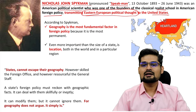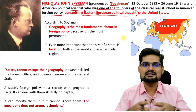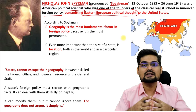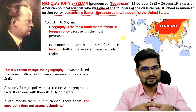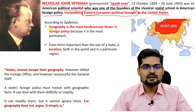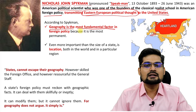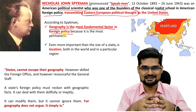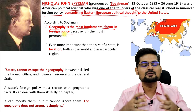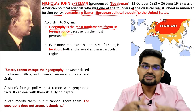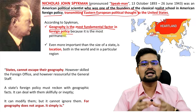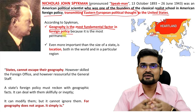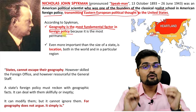Heartland and rimland are just adjoining areas according to different theories. Rimland is Speakman's theory; heartland we have already learned in Mackinder's theory, which was essentially about Eastern Europe being the heartland of the world. According to Speakman, geography is the most fundamental factor in foreign policy. This is deterministic — geographically and locationally deterministic — similar to Mackinder's theory.